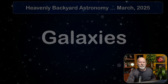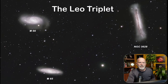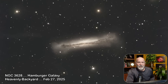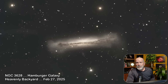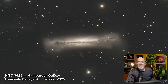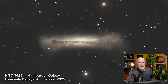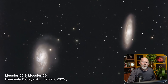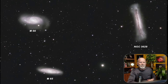One of my favorites is the Leo Triplet — three galaxies in Leo comprising M65, M66, and NGC 3628, known as the Hamburger Galaxy. NGC 3628 contains about 200 billion stars and is about 35 million light years away. Messier 65 and 66, which I photographed just last night, each also contain about 200 billion stars — about the same size as our own Milky Way, which contains about 200 to 250 billion stars. So here you have three similar-sized galaxies all interacting with each other.